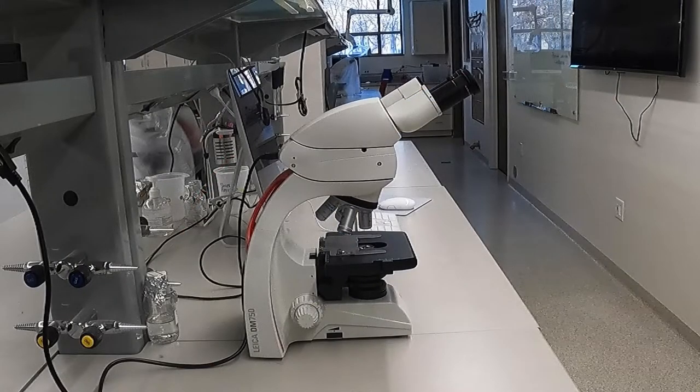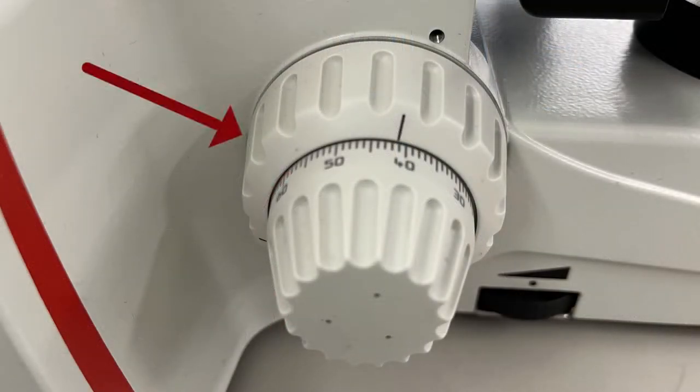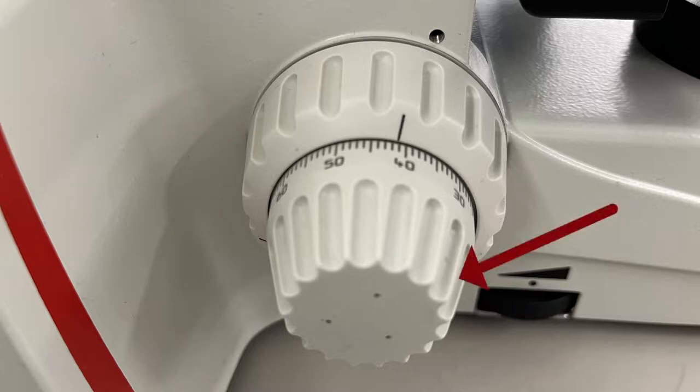On the microscope frame, you can see a set of two knobs. The larger one is the coarse focus knob and the smaller one is the fine focus knob.